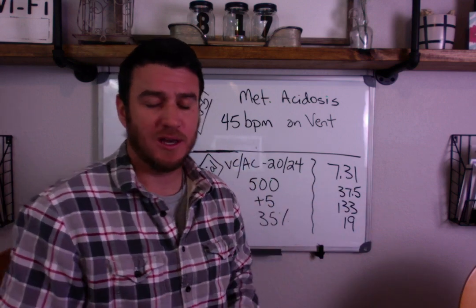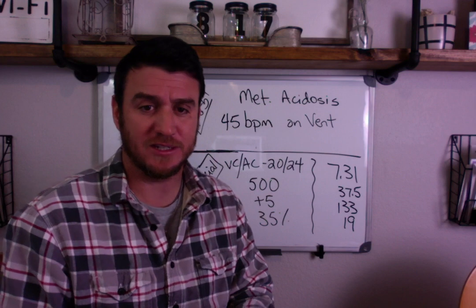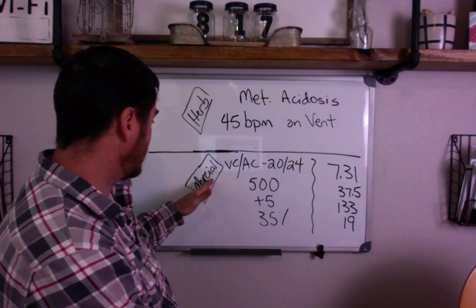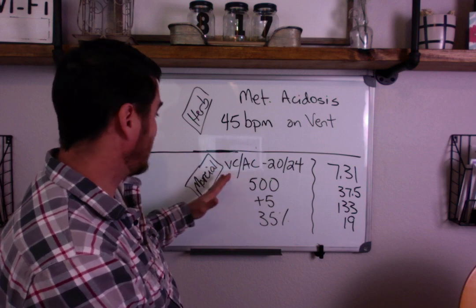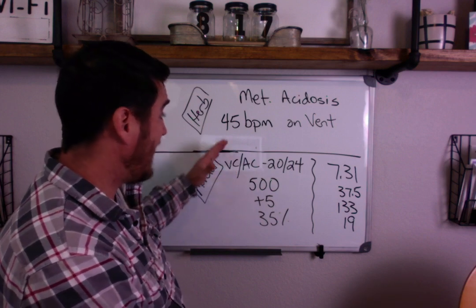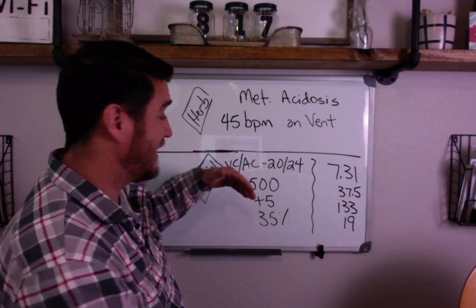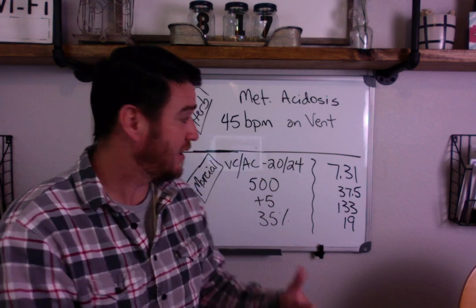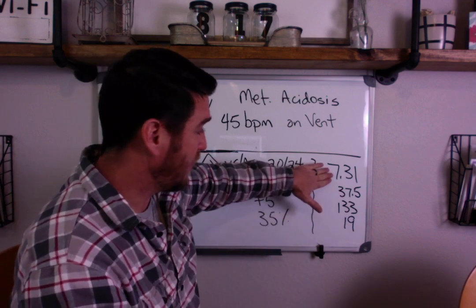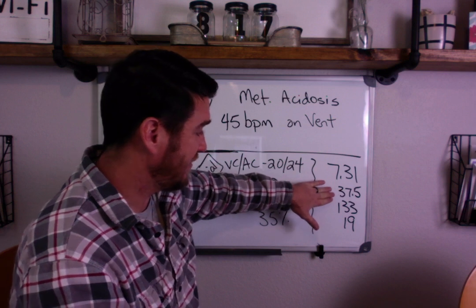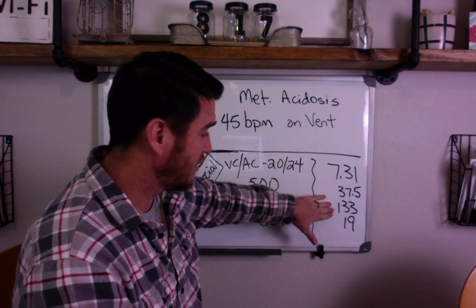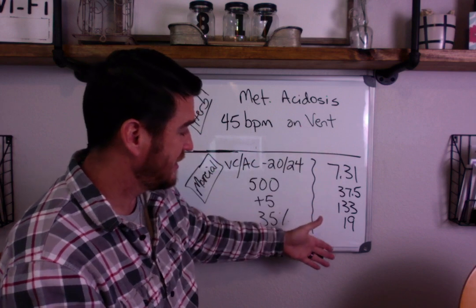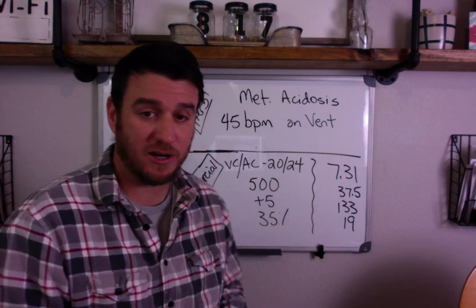Herb, I hope that helps and clarifies with the limited information — that's probably about the best I can do. Now I'm not sure if this is Marcial or Marshall, but Marshall added to this comment and said he saw the same thing. Here's his numbers: pH 7.31, CO2 was 37.5, PaO2 was 133, and bicarb is 19. This is a metabolic acidosis.